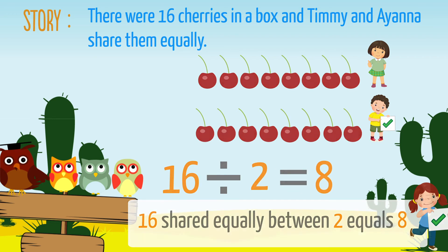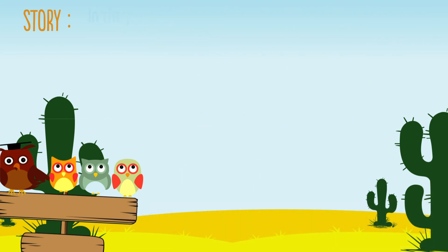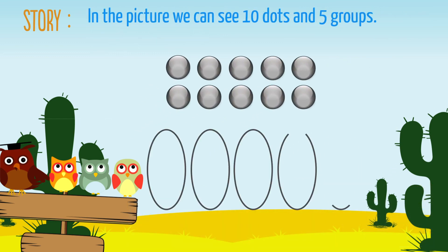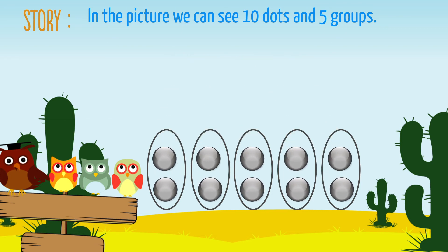Let's have another go. In the picture, we can see ten dots and five groups. If we share the dots equally between the five groups, each group has two dots. The calculation for this would be: